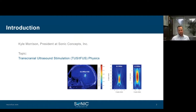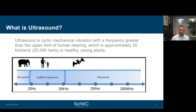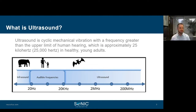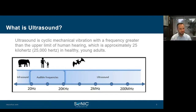I'd like to start off by presenting the basic frequency range in which sound is determined. Anything above 20 kilohertz is considered ultrasound. The audible frequencies for humans are between 20 hertz and 20 kilohertz. We normally work between 100 kilohertz and up to five megahertz in therapeutic ultrasound — a little bit on that lower frequency end for penetrating skull and bone tissue.